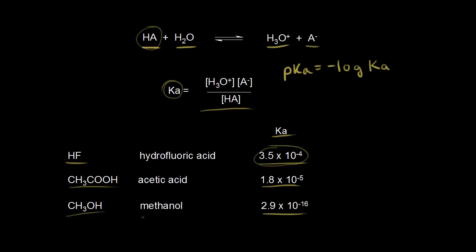So if we wanted to find the pKa for methanol, all we have to do is take the KA and take the negative log of it. So the pKa is equal to the negative log of 2.9 times 10 to the negative 16.